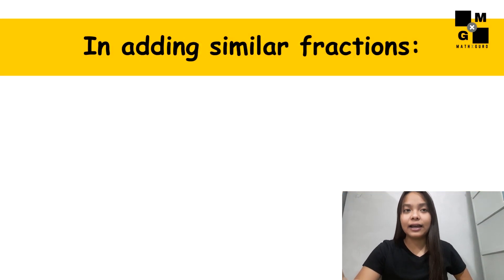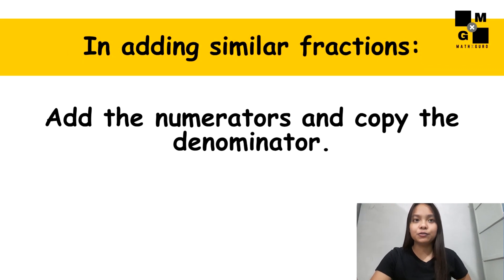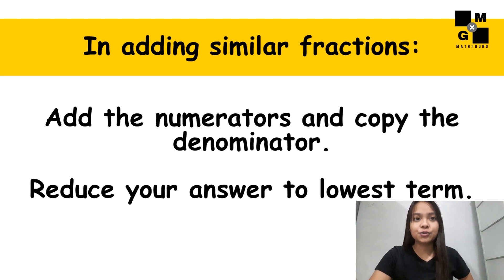Let us now learn how to add similar fractions. In adding similar fractions, all you have to do is add the numerators and copy the denominator. After that, make sure to reduce your answer into lowest term.